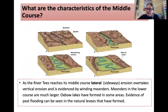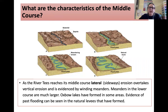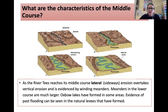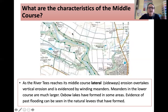In the middle course, meanders start to appear. The river goes from vertical erosion to a more lateral, sideways erosion, creating a large floodplain. Lateral erosion takes over and meanders in the lower course are much larger. Oxbow lakes have formed in some areas, and past flooding can be seen in the natural levees that have formed at the sides of the river. You can see on the map this is the middle section — those meanders and bends — and over time those meanders will become narrower and narrower and eventually join.